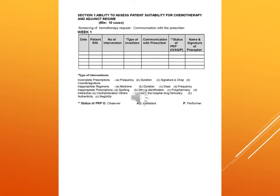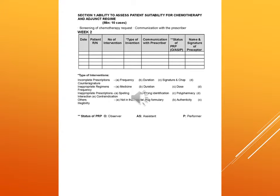Types of interventions include incomplete prescriptions covering frequency, duration, signature and chop, and countersign; inappropriate dosage form covering medicine, duration, dose and frequency; inappropriate prescriptions such as spelling errors, wrong identification, polypharmacy, interaction, and contraindication; and others such as drugs not in the hospital formulary or availability issues. The status of PRP is recorded as observer, assistant, or performer. The same chart pattern is followed in week 2.